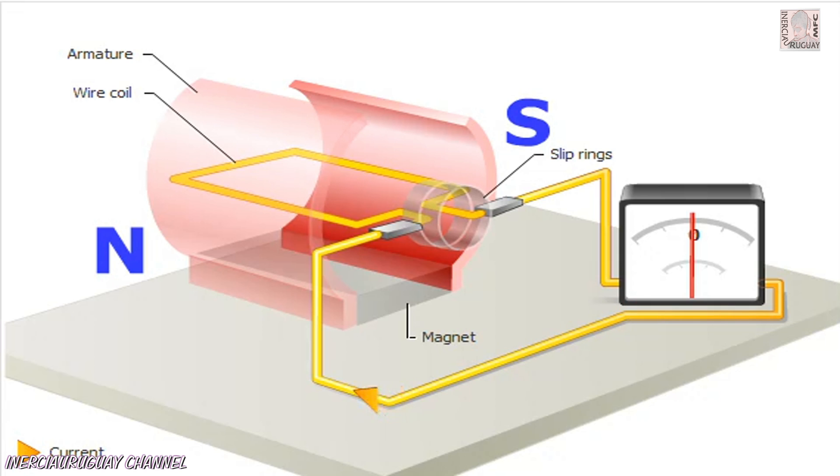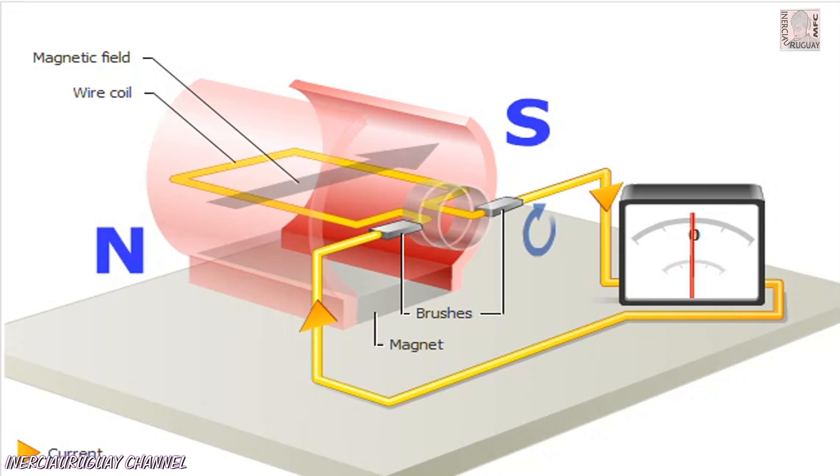When wires in the coil cut through the magnetic field between the poles of the magnet, current is induced in the wire. When the coil is turning in the direction shown, current flows toward the right in the far side of the coil and toward the left in the near side.